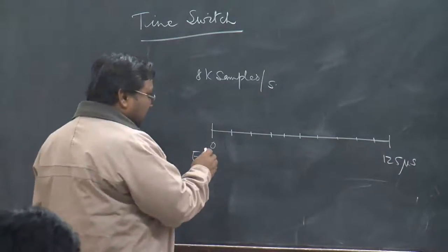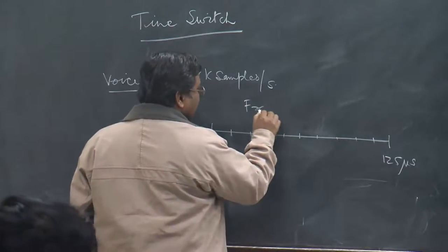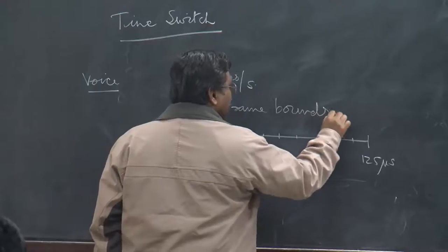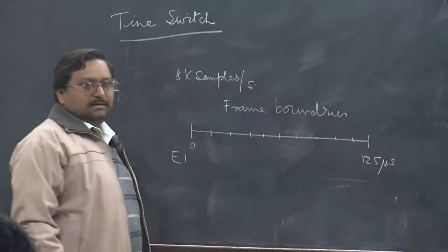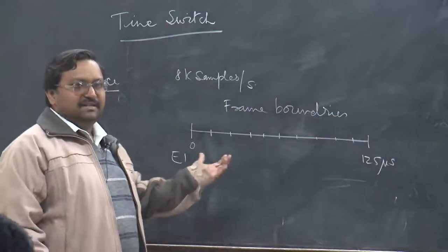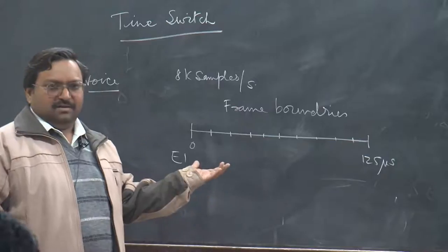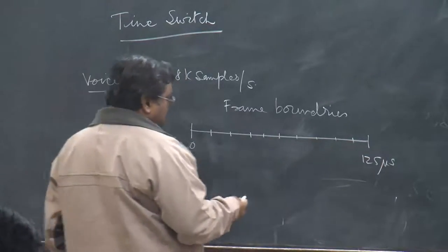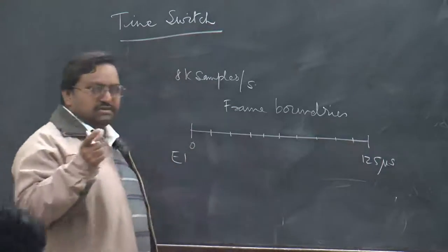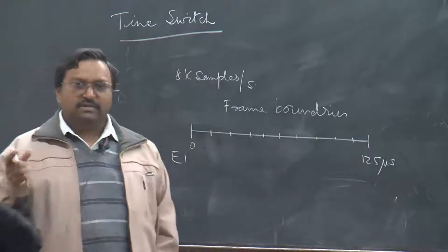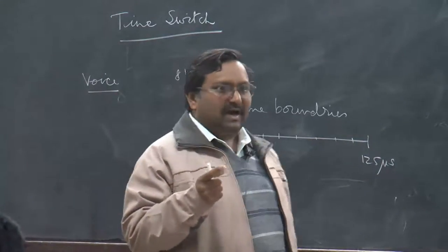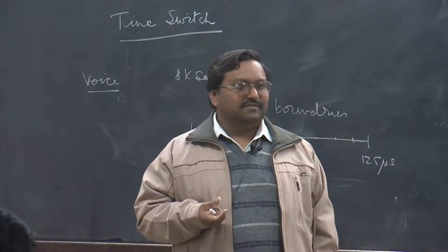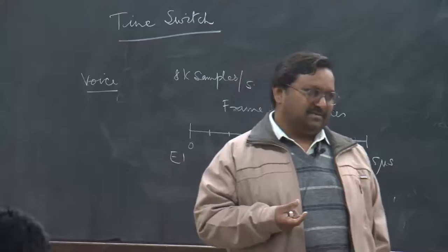Frame boundaries need to be identified, so a frame delineation mechanism has to be present. In the E1 system, two slots are used: one slot for identification of frame boundaries and a second slot for signaling purposes.